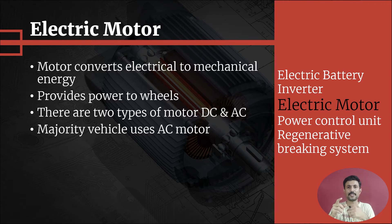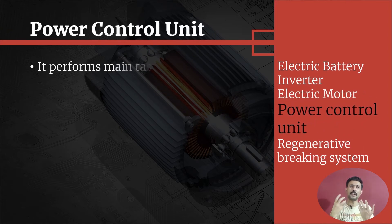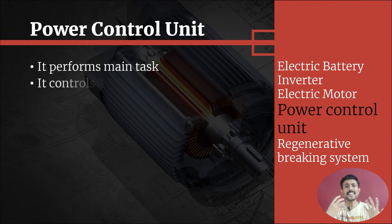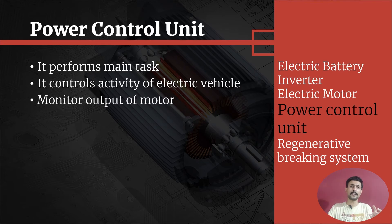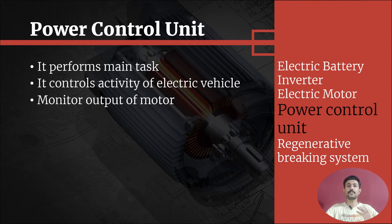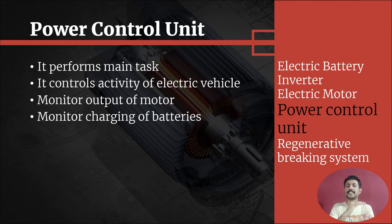The next topic is the power control unit. The power control unit performs the main control tasks of the electrical vehicle. It monitors the output of the electrical motor — how much power the motor is giving, what the RPM is, and what the frequency is. It also monitors the battery storage capacity, tracking how much charge is remaining.